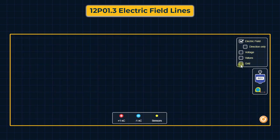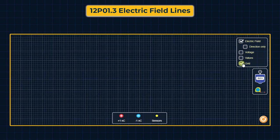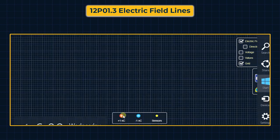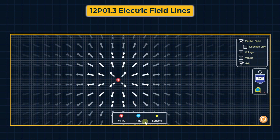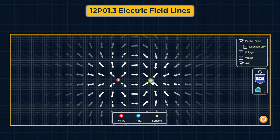अब हमने एक positive charge और एक negative charge का configuration draw किया। हम जानते हैं कि ये एक दूसरे को attract करते हैं, तो electric field lines positive charge से start होंगी और negative charge पर end होंगी। इन दोनों charges के बीच में कहीं पर भी electric field की value zero नहीं होगी।